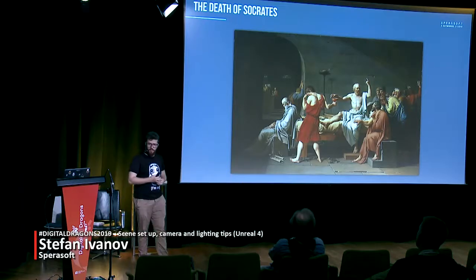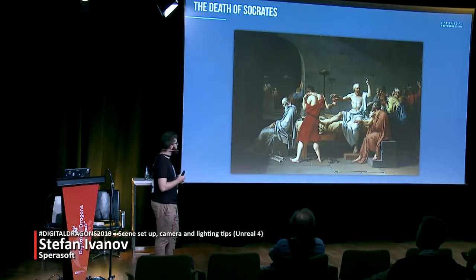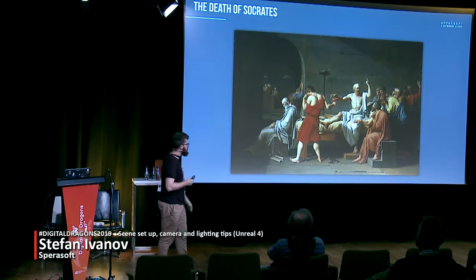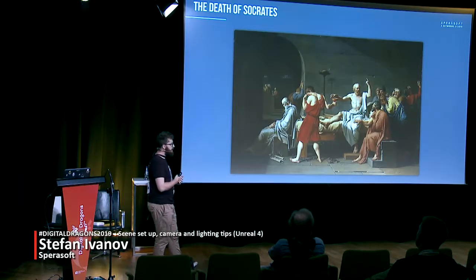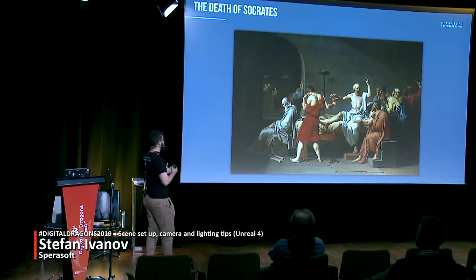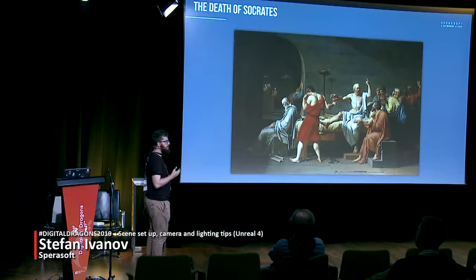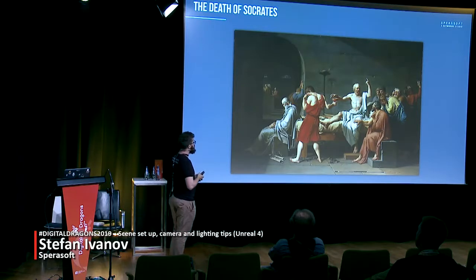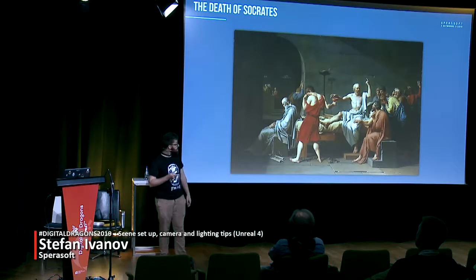The next painting was picked because of its different light setup compared to the previous one. This one has harsher shadows and a lot more contrast. This technique is used to make the viewer feel that the scene is more dramatic. The higher contrast and darker parts of the scene create a feeling that the scene is not very pleasant — which makes sense, since it depicts someone drinking poison.